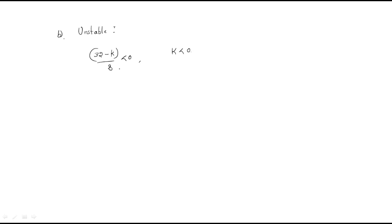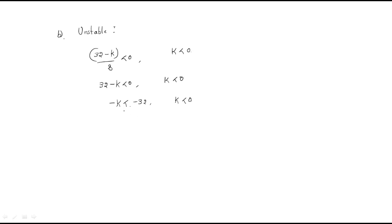Simplifying further: from −k < −32, multiplying both sides by −1 (reversing the inequality) gives k > 32. So the system is unstable when k < 0 or k > 32. An important note: always keep the −k term and then apply the sign reversal after moving the constant — this avoids common errors when determining the unstable range.